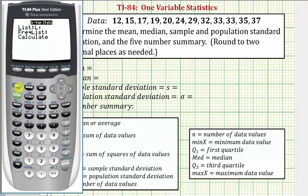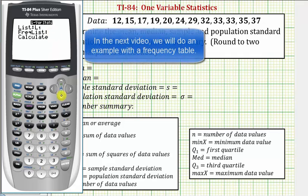Now we press the down arrow. We don't have a frequency list, so we can leave this blank. So we go down to calculate and press enter.